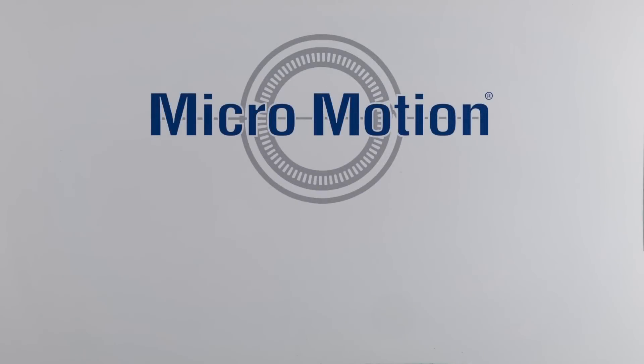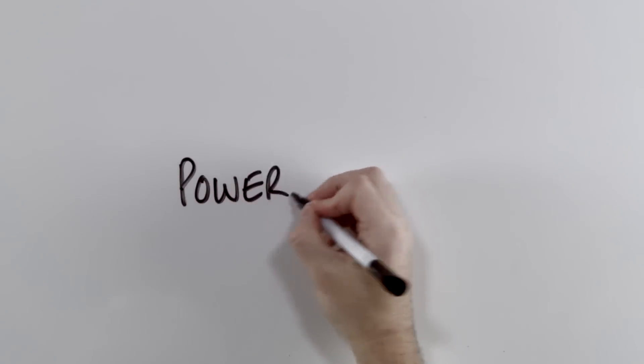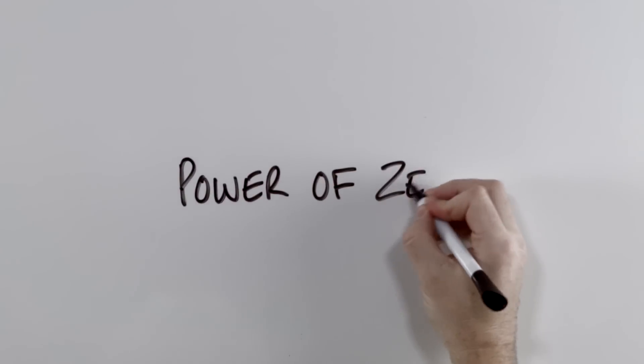Hi. Today we're going to talk about Emerson's Micromotion and Zero Verification. Let's start by solving one of the last remaining Coriolis mysteries. We'll call it the Power of Zero.